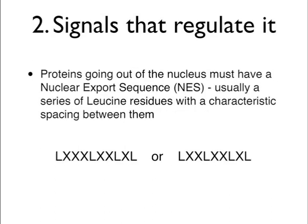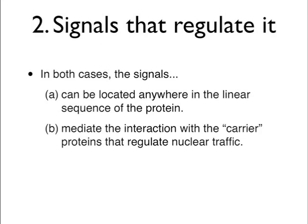On the other hand, proteins going out of the nucleus must also have specific signals allowing them to be trafficked outside, known as nuclear export signals or NES. Nuclear export signals are usually a series of leucine residues with a very characteristic spacing between them. In both cases, the signals that regulate traffic through the nuclear pore complex can be located anywhere in the linear sequence of the protein, and they work by mediating the interaction between the cargo — the protein being trafficked — and the carrier proteins that regulate nuclear traffic.